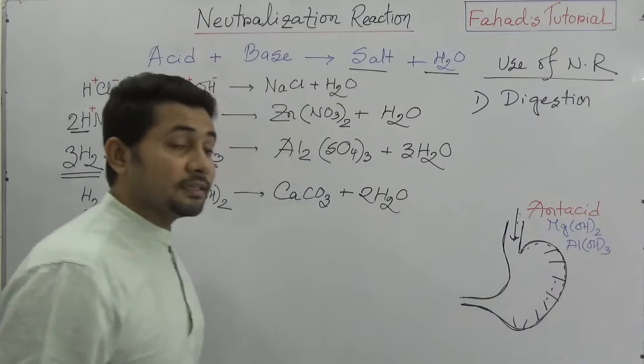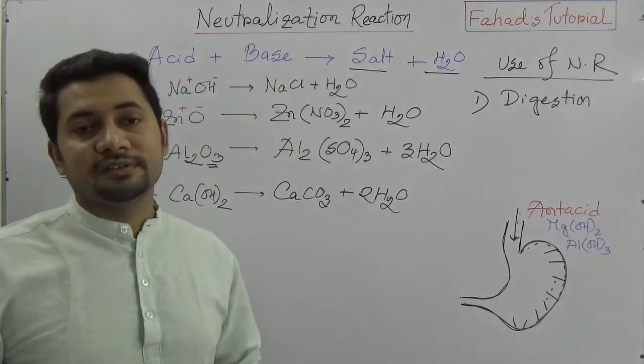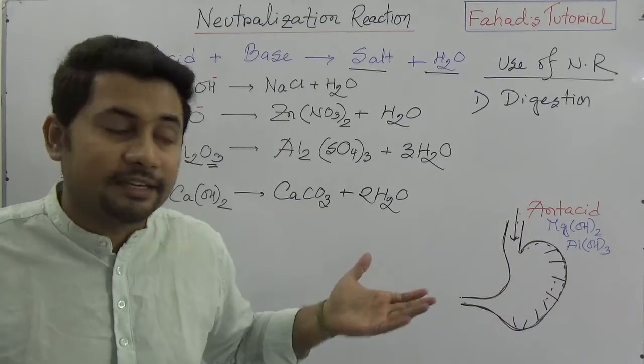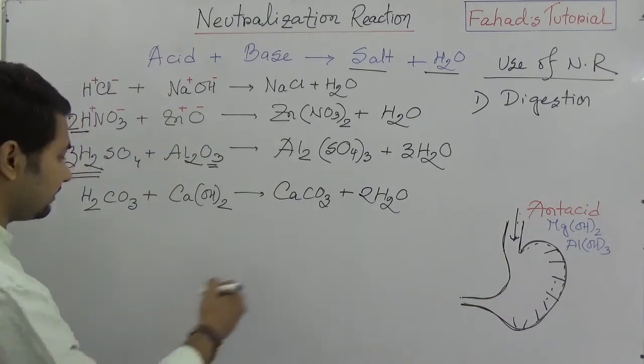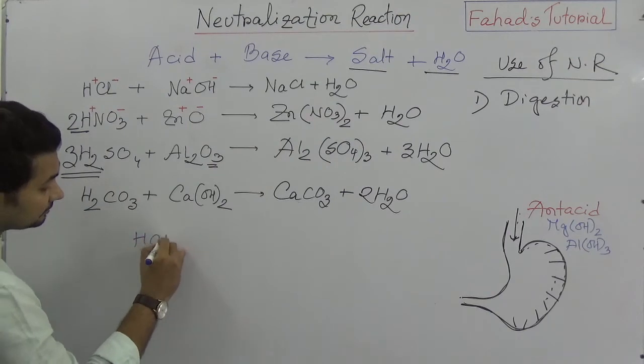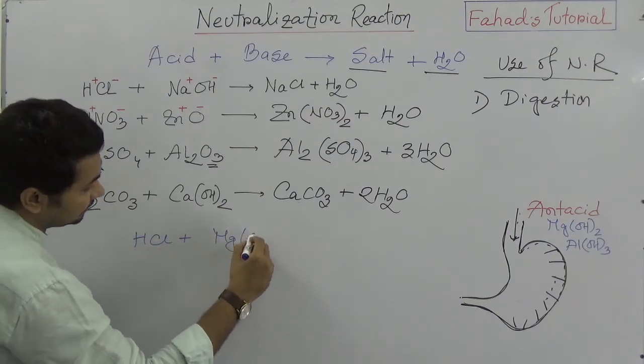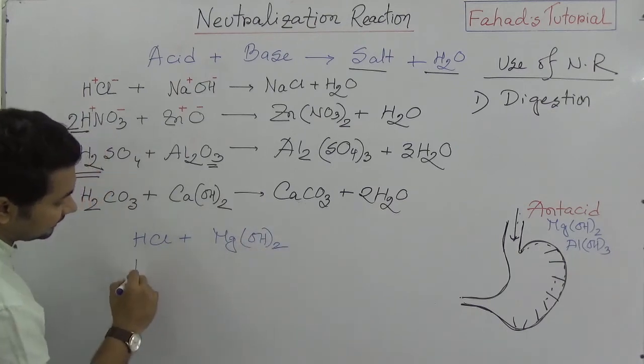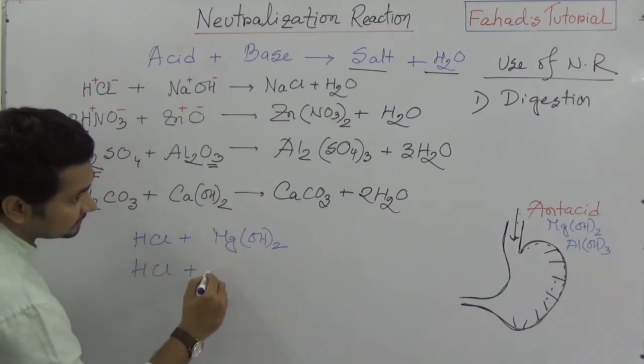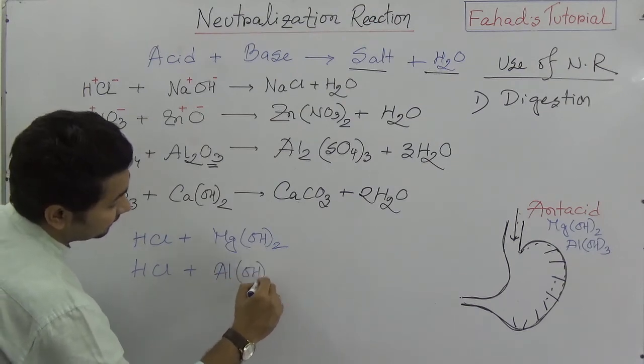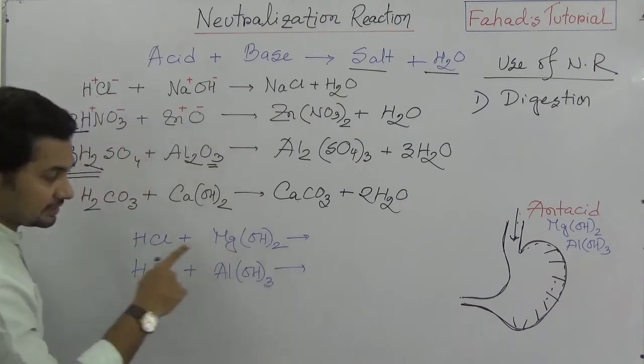This is also the example of neutralization reaction. Magnesium hydroxide or aluminium hydroxide is reacting with hydrochloric acid. So what would be the reaction? Hydrochloric acid is reacting with magnesium hydroxide, and hydrochloric acid is reacting with aluminium hydroxide.